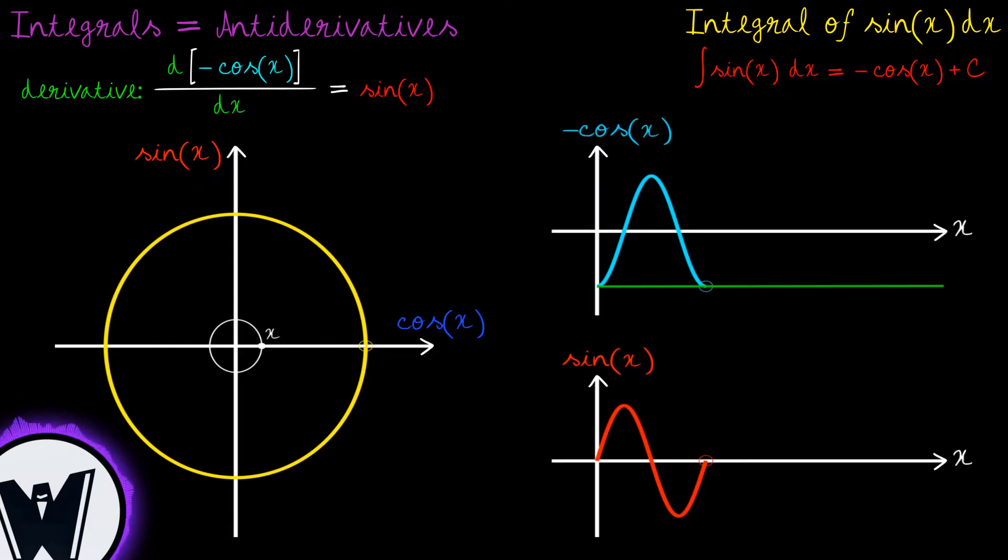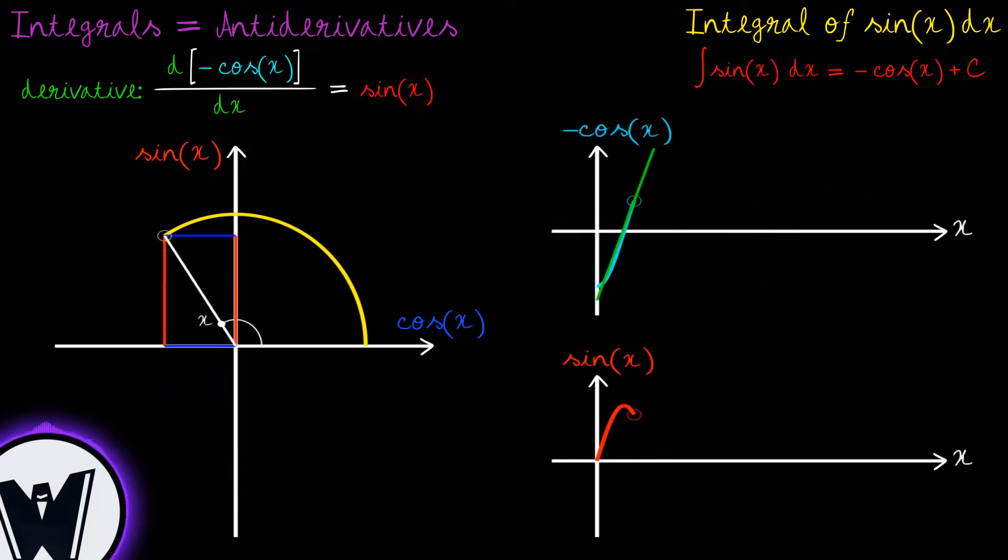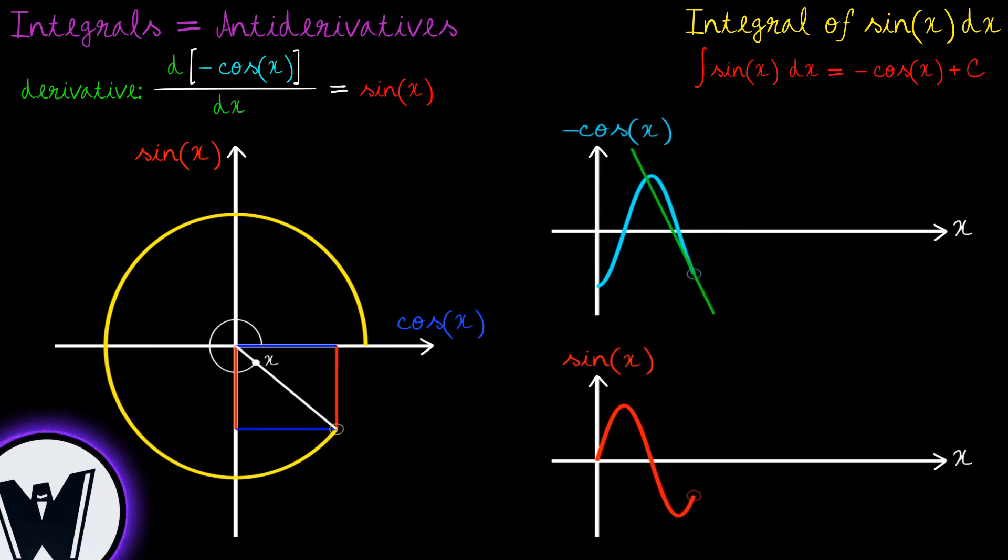This derivative of negative cosine will measure how this function changes or varies with the independent variable x. This change can be represented by the slope of this green line that is tangent to any given input, that is to any value of x.